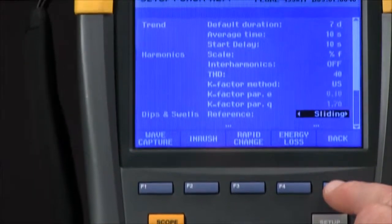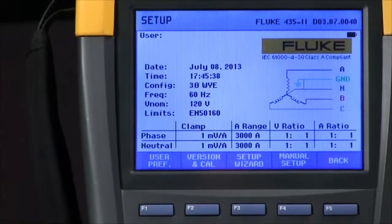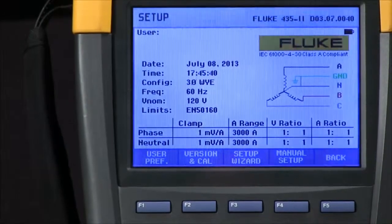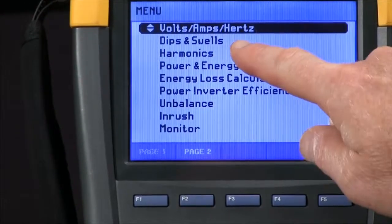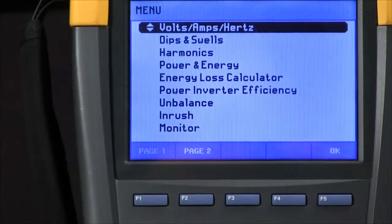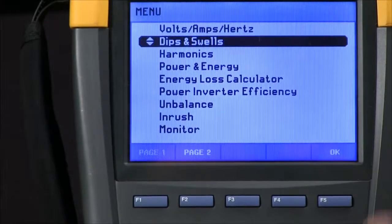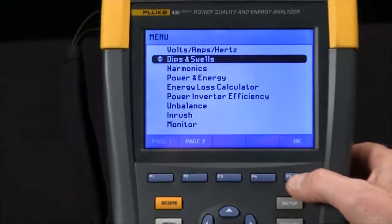Once we've done that, we hit the back key. Come to our menu. We want to select dips and swells with the arrow key. We come down there. F5 for OK.